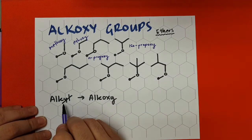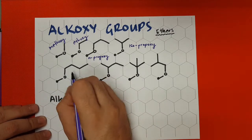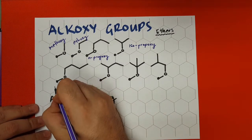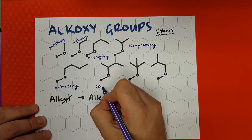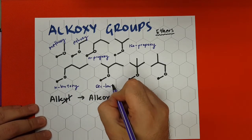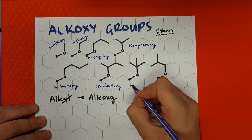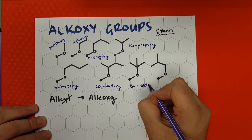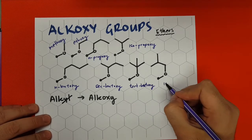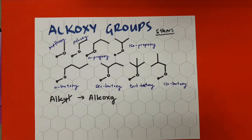So we're basically, in all of these cases, switching the L for the oxy group. We have n-butoxy, sec-butoxy, tert-butoxy, and last but not least, isobutoxy. And these would all continue to pentyl, hexyl — pentoxy, hexoxy — all those different nomenclatures.